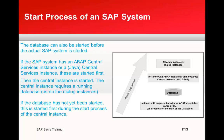Every SAP system has a database and at least one instance. An SAP system with a Java stack also has a central services instance. A system with an ABAP stack can contain an ABAP central services instance that provides the ABAP enqueue service and ABAP message server — in this case, the central instance doesn't have an enqueue work process or a message server. An SAP system with both ABAP and Java stacks can therefore have two central instances: one for Java and one for ABAP.